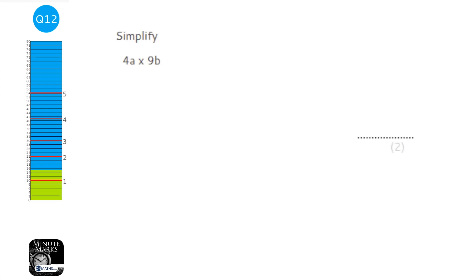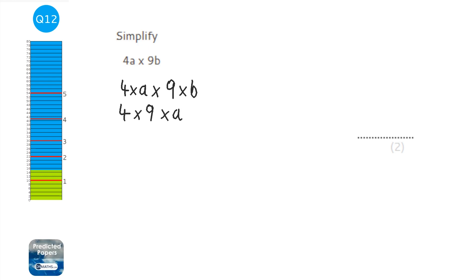To simplify this expression, remember that 4a means 4 times a and 9b means 9 times b. We can multiply 4 and 9 together — we know that 4 times 9 is 36, and we don't show the times sign in algebra. So the answer is 36ab.